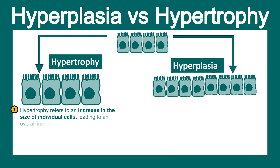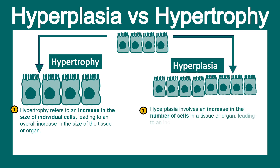Hypertrophy refers to an increase in the size of individual cells, leading to an overall increase in the tissue or organ size. In contrast, hyperplasia means an increase in the total number of cells — the size doesn't change. In hypertrophy, no new cells are added; cells simply become bigger. In hyperplasia, new cells are added but their size doesn't change significantly.